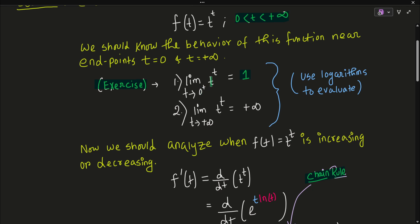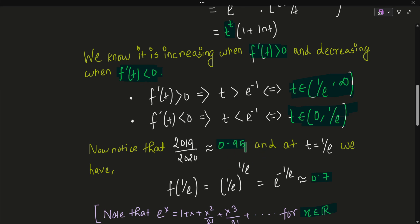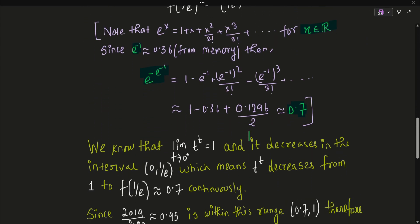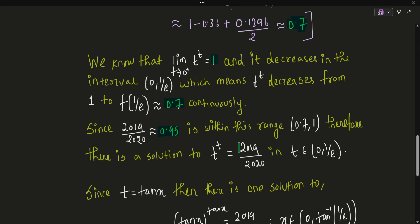So the function starts at value 1 when t → 0, decreases to approximately 0.7 at t = 1/e. Since 2019/2020 ≈ 0.95 lies between 0.7 and 1, by continuity and monotonicity there must be exactly one solution to t^t = 2019/2020 in the interval t ∈ (0, 1/e). Since t = tan(x), this corresponds to x ∈ (tan⁻¹(0), tan⁻¹(1/e)) = (0, tan⁻¹(1/e)).